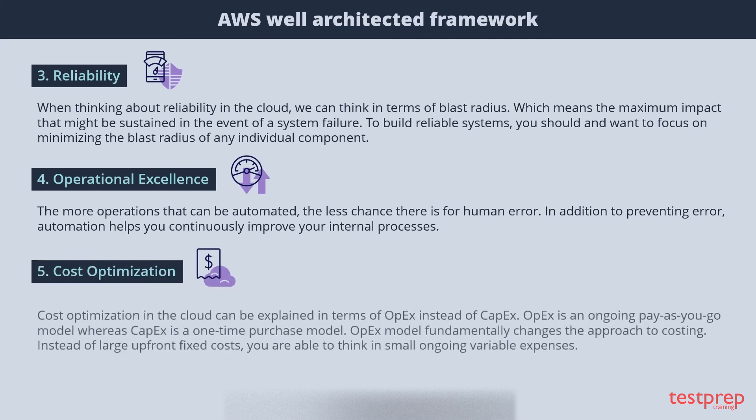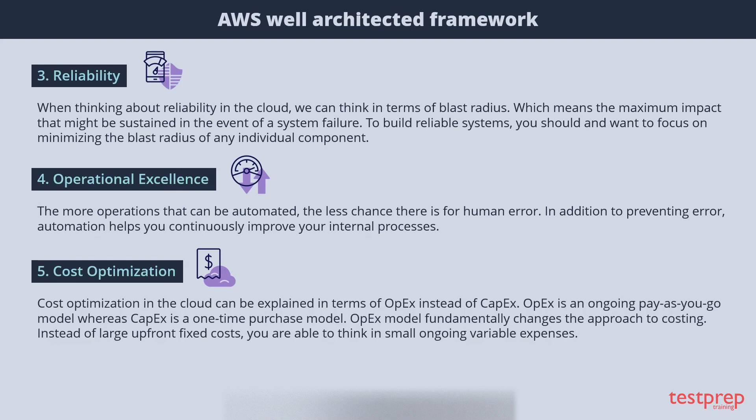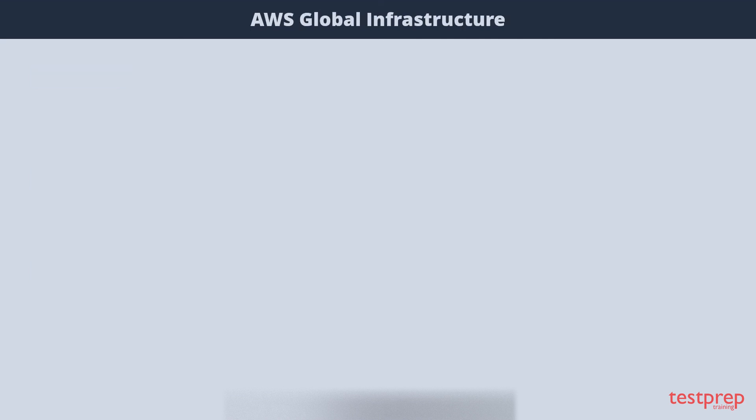Cost Optimization in the cloud can be explained in terms of OpEx instead of CapEx. OpEx is an ongoing pay-as-you-go model, whereas CapEx is a one-time purchase model. The OpEx model fundamentally changes the approach to costing — instead of large upfront fixed costs, you are able to think in small ongoing variable expenses.